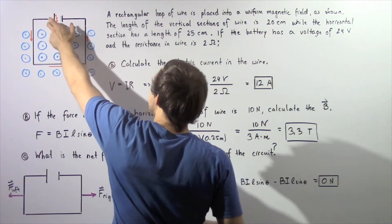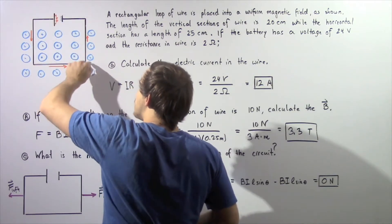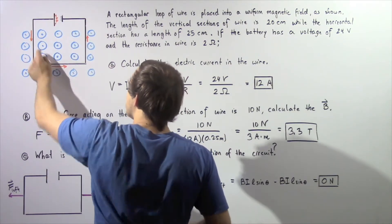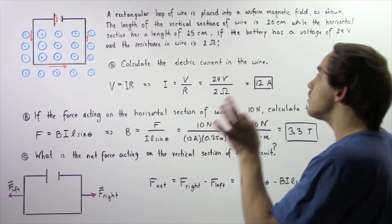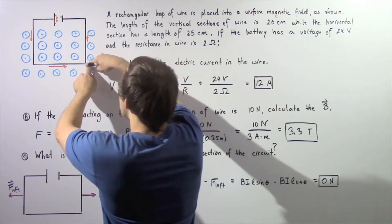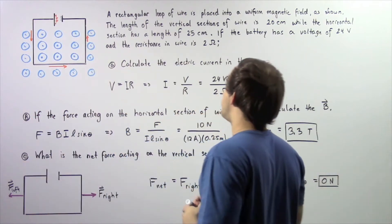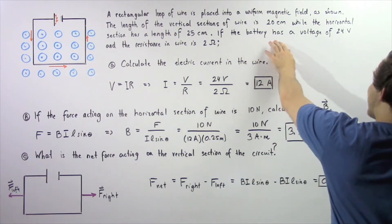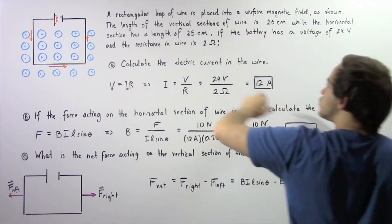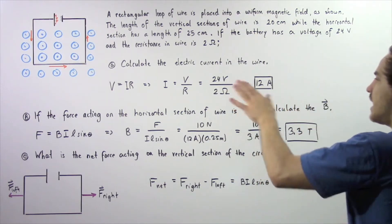The battery inside our electric circuit creates an electric current that flows in the general direction described by the orange arrows. The length of the vertical sections of the wire is 20 centimeters, while the horizontal section has a length of 25 centimeters. These sections are 20 centimeters each, and the horizontal section is 25 centimeters. The battery has a voltage of 24 volts and the total resistance in the circuit is 2 ohms.